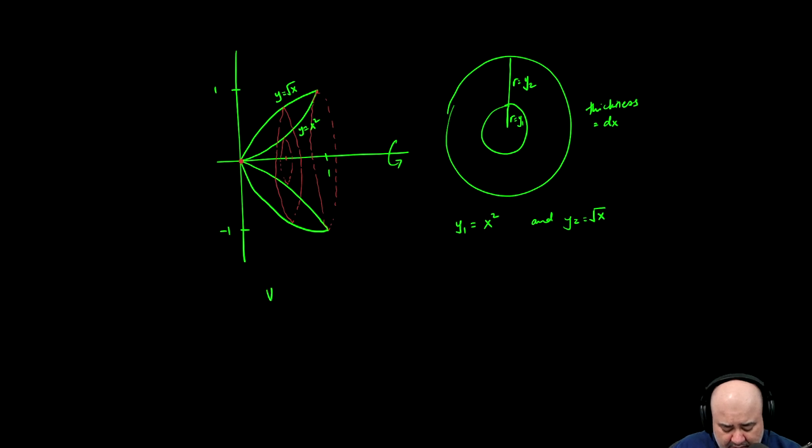Using the washer method, the volume will be the integral from where we start slicing to where we stop, which is we start at 0 and we end at 1, pi times the outer radius squared minus the inner radius squared with respect to x in this case.